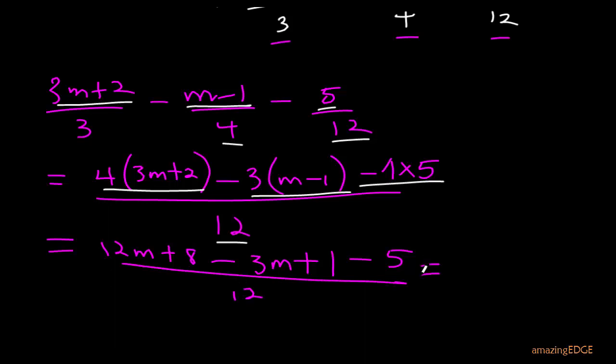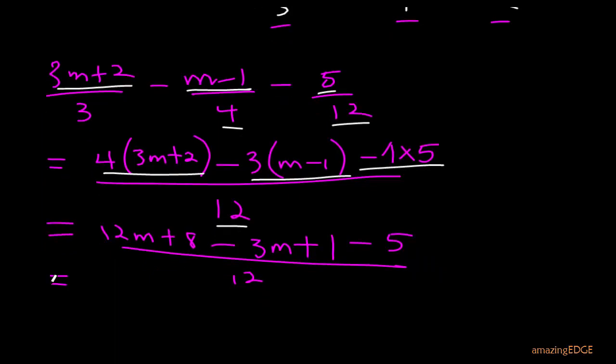So this will give us, now if we do this simplification, we'll have that to be equals to. So we can pull the factorization by grouping. So we can pull the m and ordinary numerical values. So we have 12m - 3m. So we are now done with m. So we go to ordinary values. So we start with 8. So we have plus 8. We have plus 1. And we have minus 5.